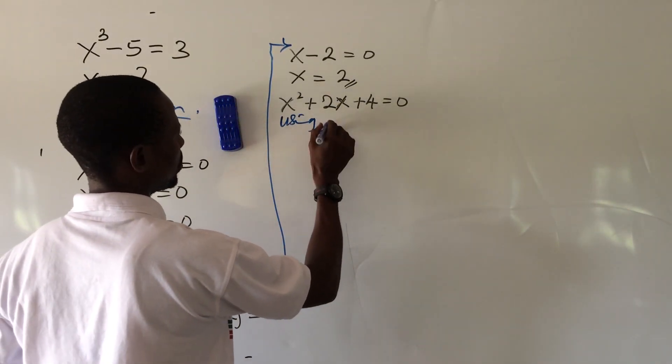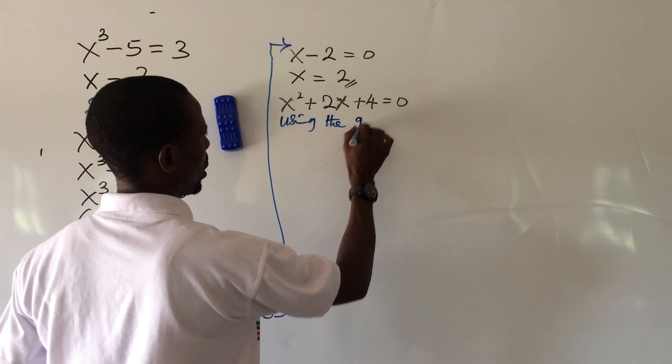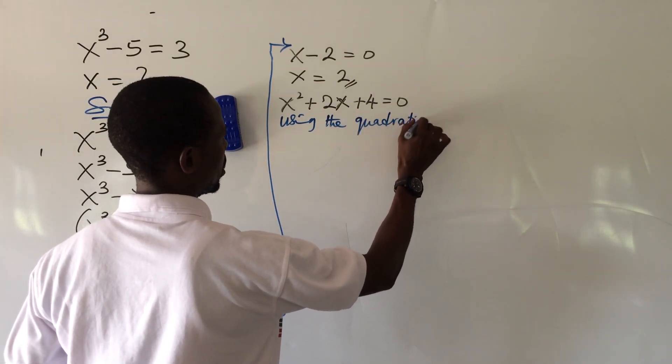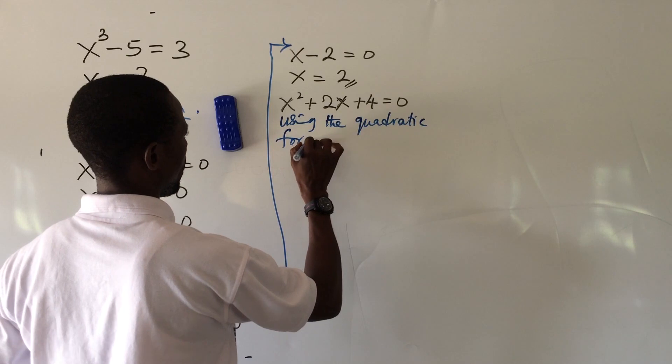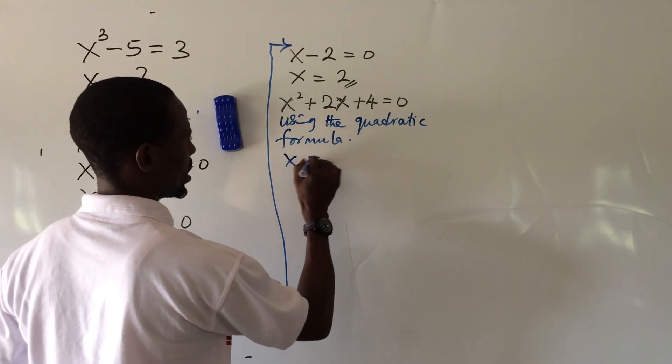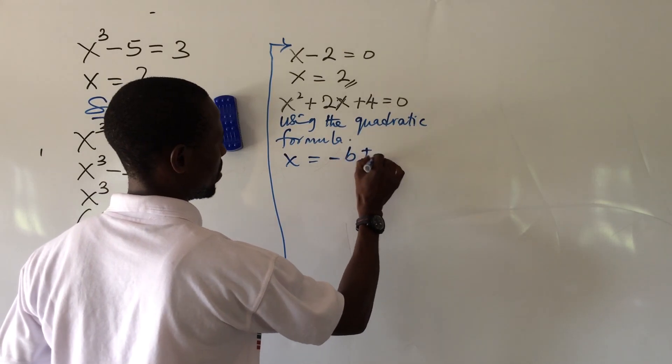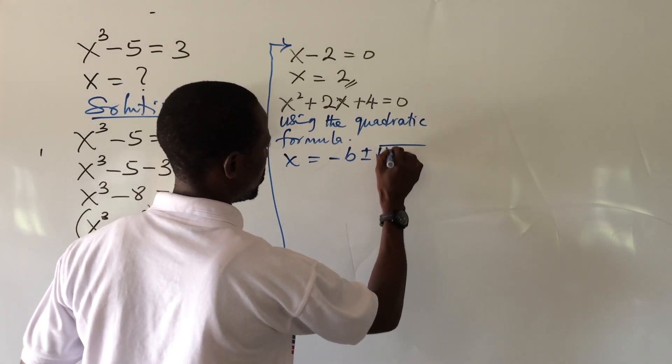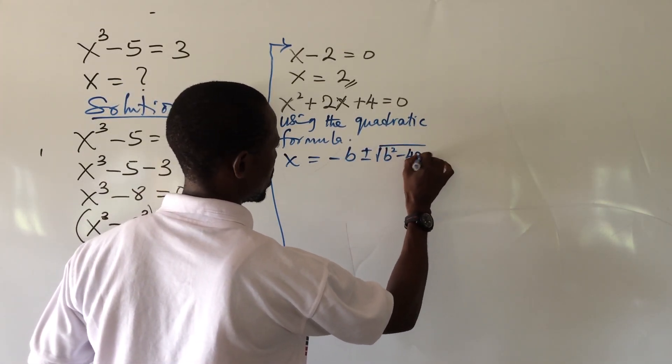So from here, using the quadratic formula, it says that x equal to minus b plus minus square root of b squared minus 4ac.